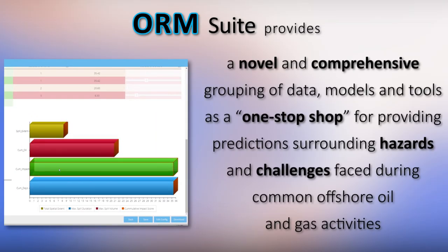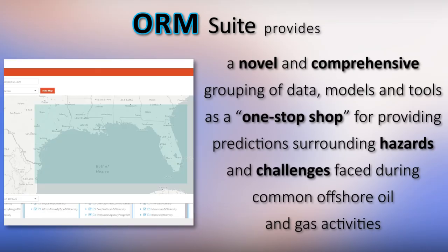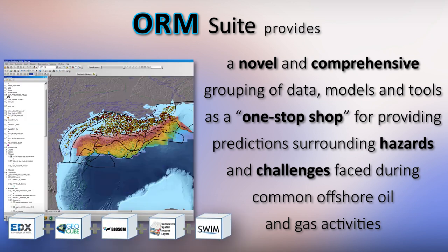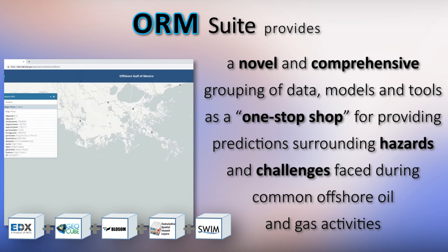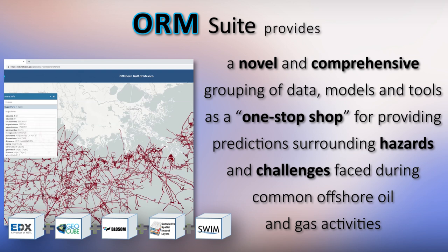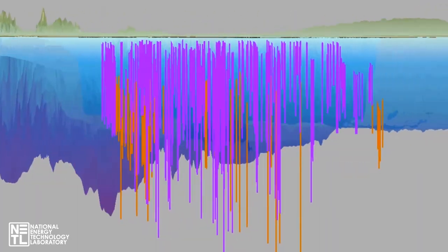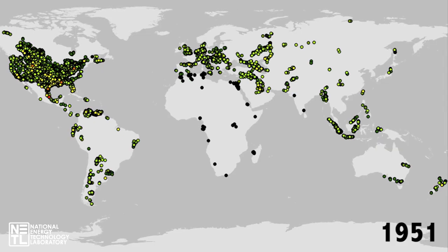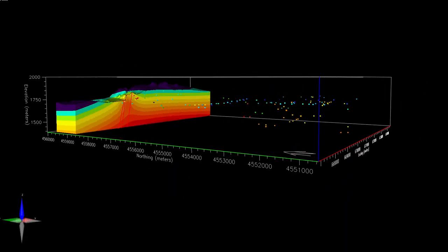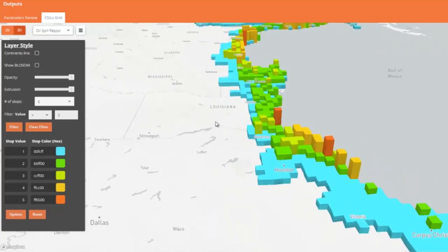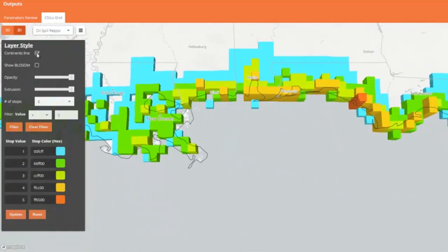The ORM suite offers a novel and comprehensive grouping of data, models, and tools as a one-stop shop for providing predictions surrounding hazards and challenges faced during common offshore oil and gas activities. It uses thousands of data sources to cross-examine data across space and time, which allows for both predictive analyses and an immensely wide scope of knowledge that no other current spill-based risk management technology can provide.